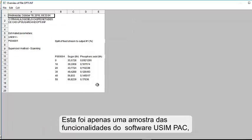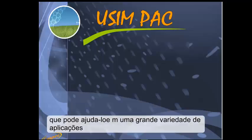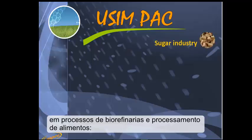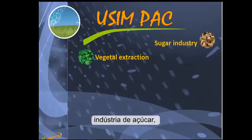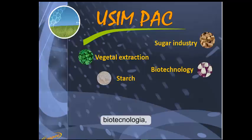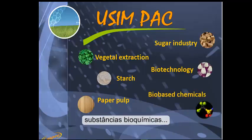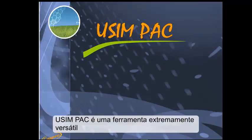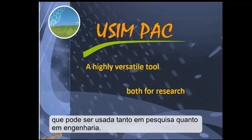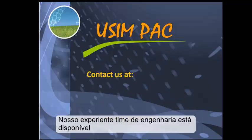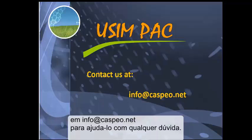This was just a sample of the capabilities of Usimpak software, which can assist you in a wide range of biorefining and food processing applications: sugar industry, vegetable extraction, biotechnology, starch production and transformation, pulp and paper, biobased chemicals. Usimpak is a highly versatile tool that can be used both in research and engineering. Our experience and engineering teams are available to help with any queries.